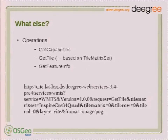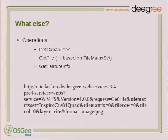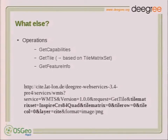Some details on what WMTS provides: it provides the operation GetCapabilities, with which you can get the service metadata. There is the most important operation GetTile, with which you can get your tile data. This operation is based on tile matrix sets, which I will explain a bit more later. And there is the optional operation GetFeatureInfo defined in this standard. GetFeatureInfo is a very difficult operation because there is no real standardization for the output format, making interoperability difficult even in WMS implementations.